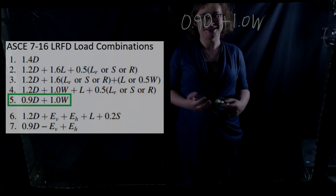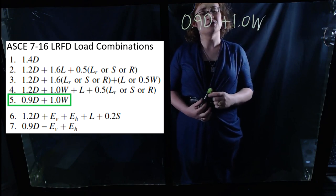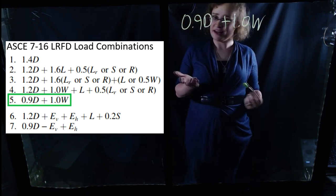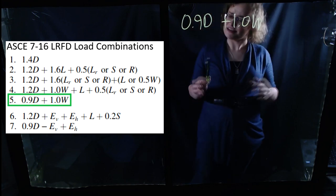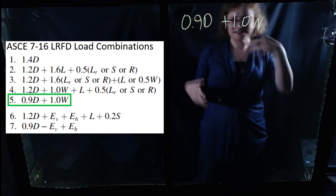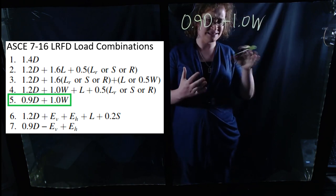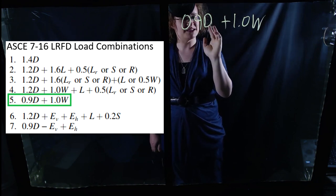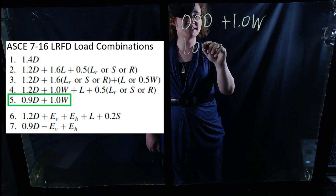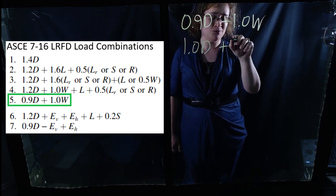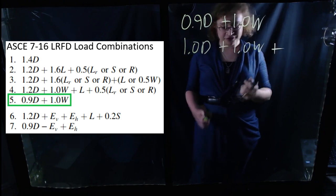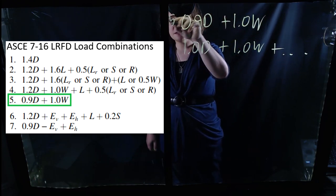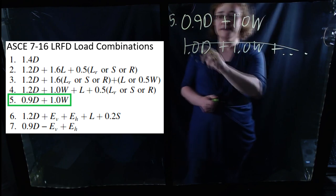Next, we have a very interesting one: ASCE 7-16 LRFD load combination number five — 0.9 times dead plus 1.0 times W. At first glance, this seems to be just a sub-case of the one above. Why does this one exist? Why not just let load combination four handle that? The previous load case had 1.2 times dead plus 1.0 times wind plus roof live load, snow, et cetera. Why does number five exist at all — wouldn't number four have taken care of that? Well, I like this one because it's kind of counterintuitive. The reason this exists is because of the particular way that wind can act on structures.